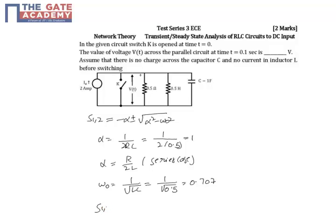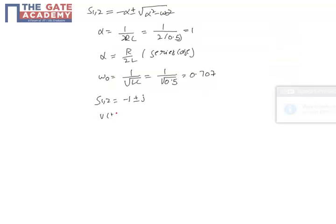S will be minus 1 plus or minus 0.j, so it is an under-damped case. V of t will be e power minus t times (A cos t plus B sin t), because the coefficient here is 1. The coefficient of the imaginary part is the frequency.